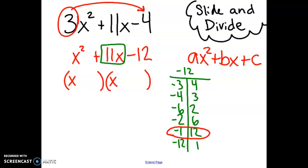So let's put them in the binomials. So x, and we said negative 1, so minus 1. And our other factor is 12, a positive 12.